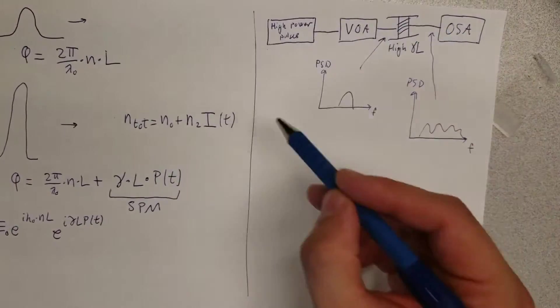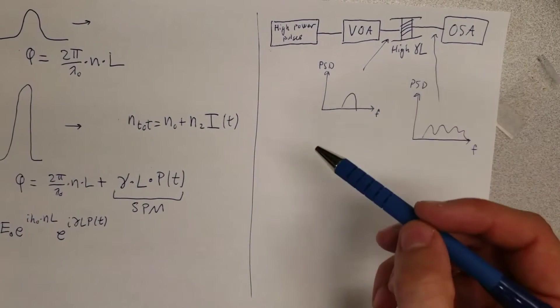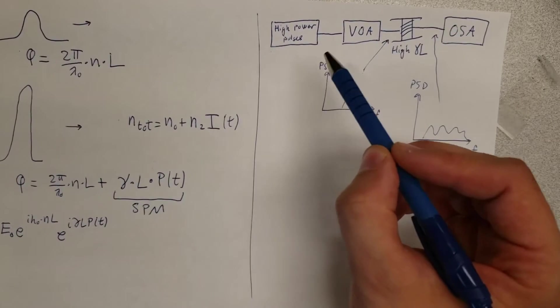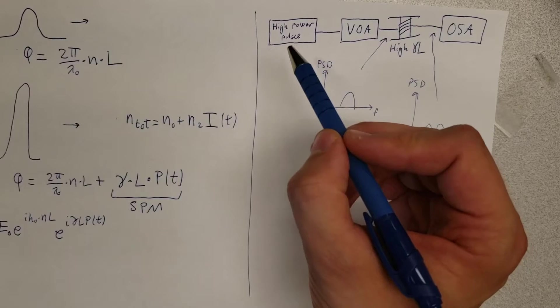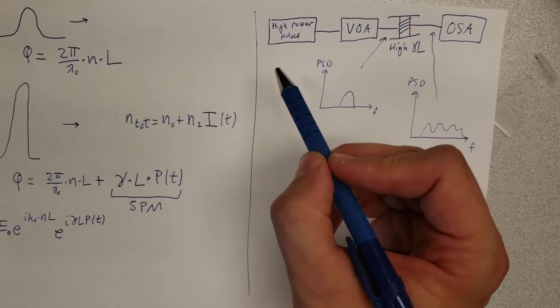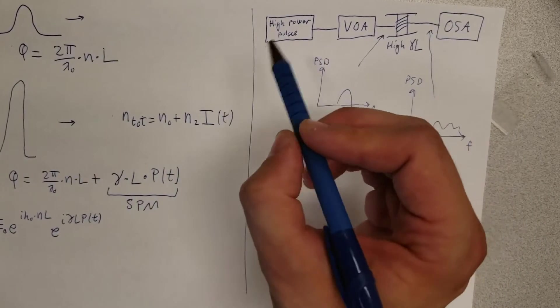But I thought it'd be nice to show in a more continuous way how we can generate these very wide spectra. So I've set up an experiment that contains a high power pulse source. These pulses are around 10 picoseconds with a peak power of around 200 watts if you tune all the way up, so that's extremely high peak power, very intense, very short pulses.